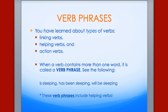You've learned about types of verbs: linking verbs, helping verbs, and action verbs. You sometimes have to look for more than one verb, and that's the case where you have a verb phrase. Now, if there are two verbs at two different places in the sentence, that's not called a verb phrase. But if they are joined together — like 'is sleeping,' 'has been sleeping,' 'will be sleeping' — you can see we have a combination of helping verbs and the action verb.